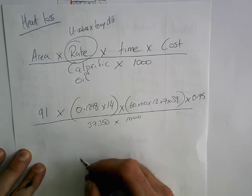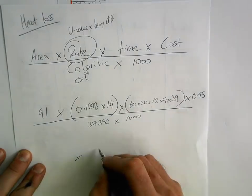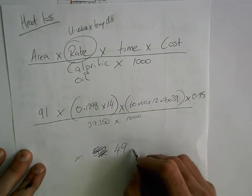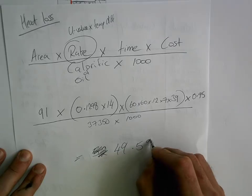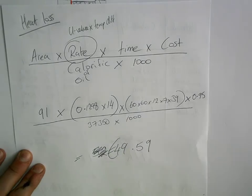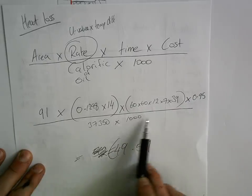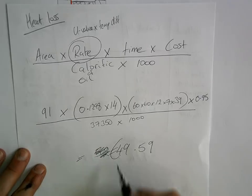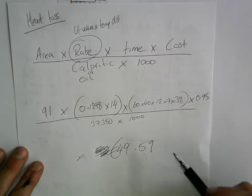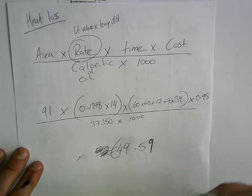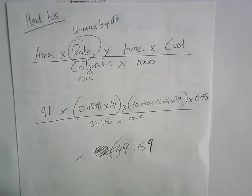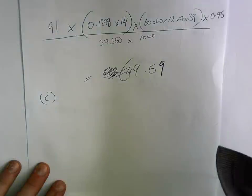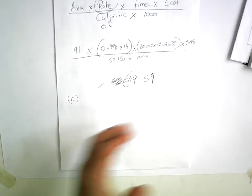When you work out your top line divided by the bottom line, you get an answer of €49.59. That's how much money is lost through heating through that floor due to poor insulation. Part C of the U-values question is generally a construction detailing question related to whatever was discussed — in this case, the floor.